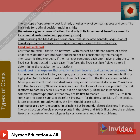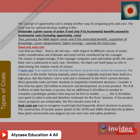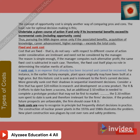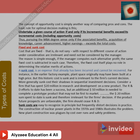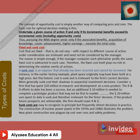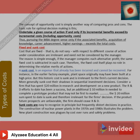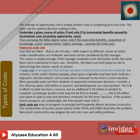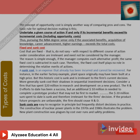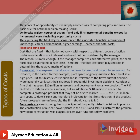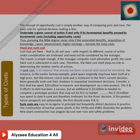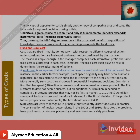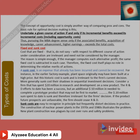Consider a firm that has spent 20 million dollars in research and development of a new product. The R&D efforts to date have been a success, but an additional 10 million dollars is needed to complete a prototype — a product that may not be first to market. The 20 million dollars already spent is a sunk cost and is therefore irrelevant to the firm's decision of whether to build the prototype or not.